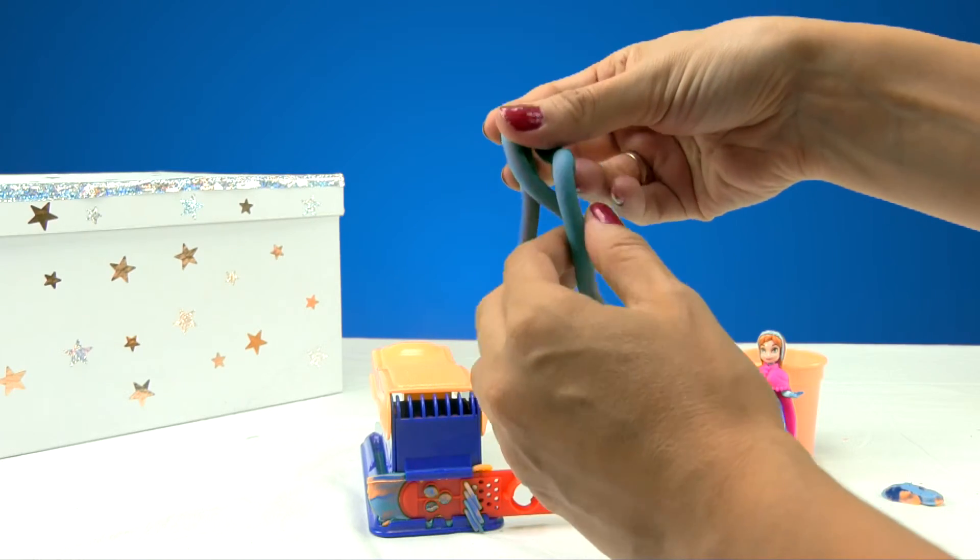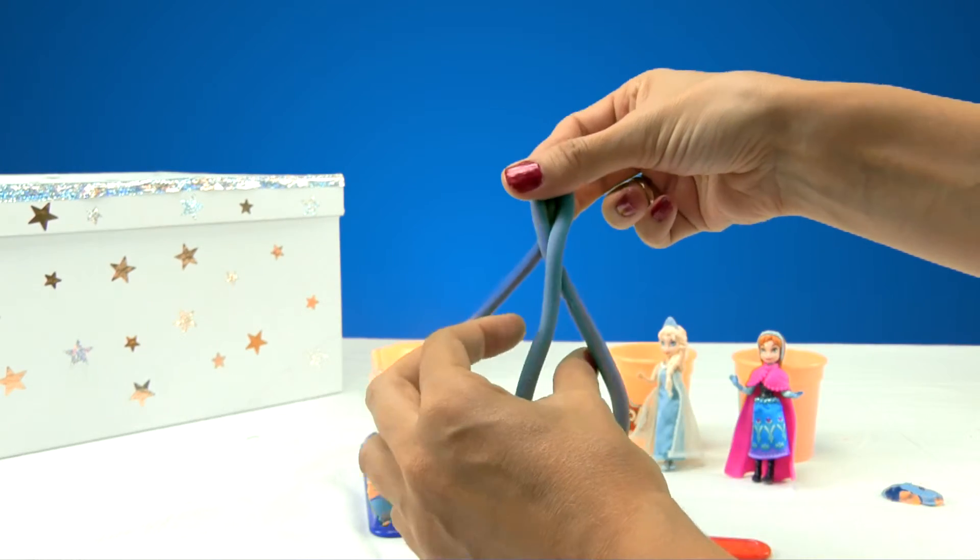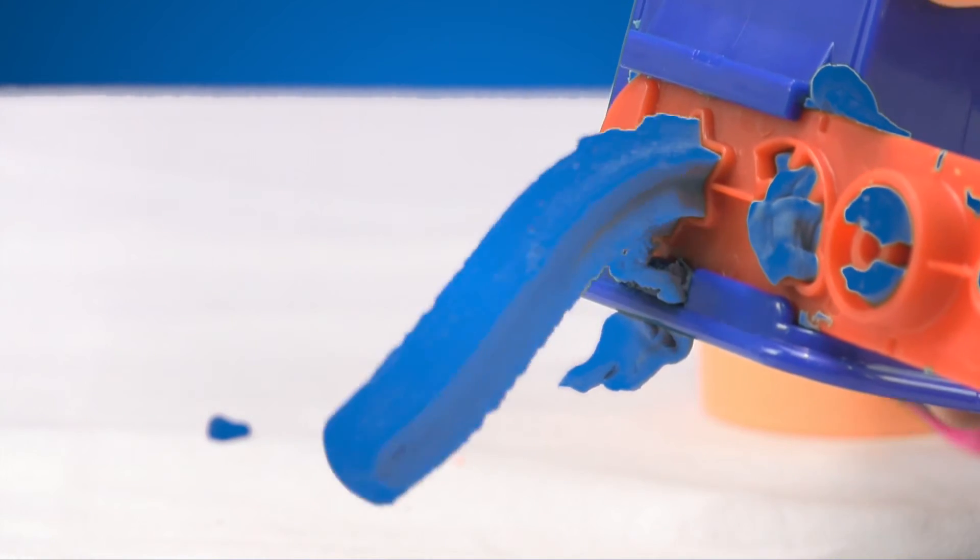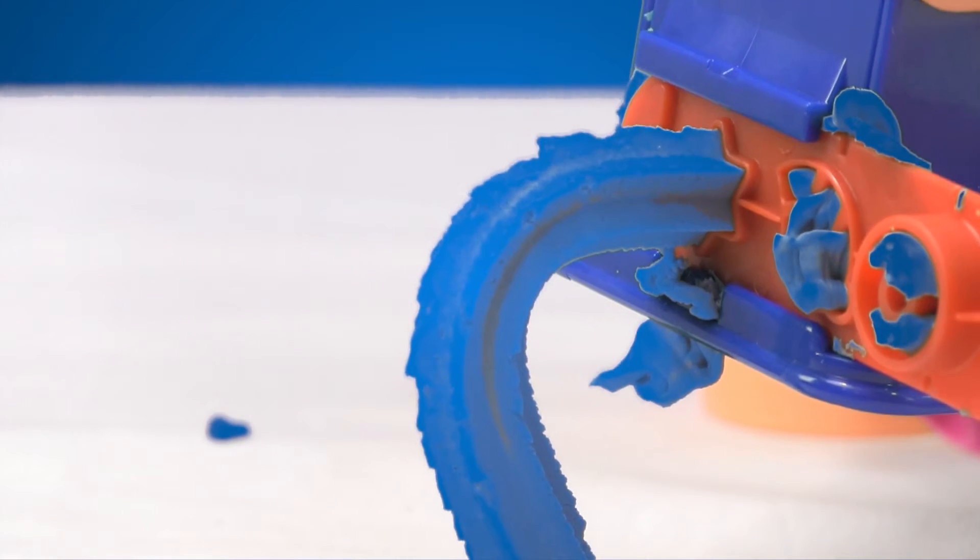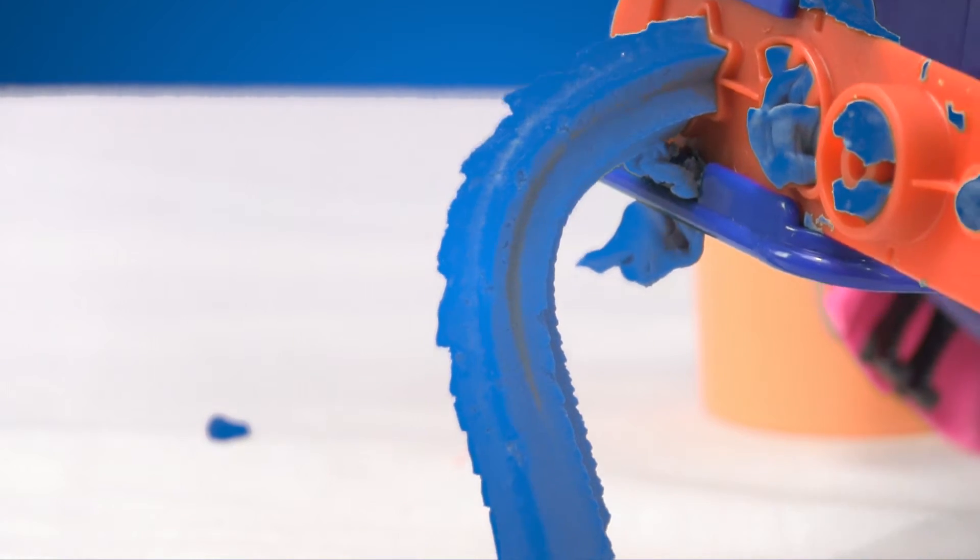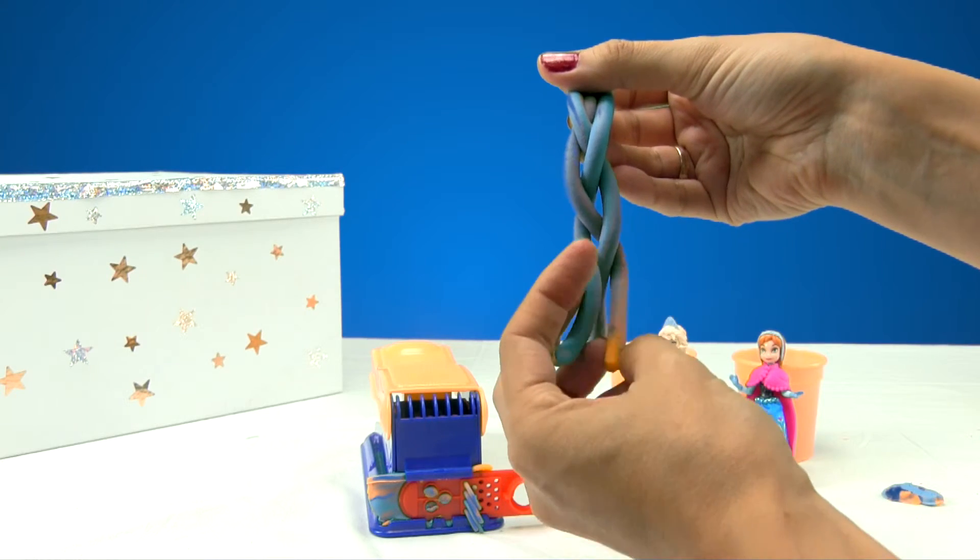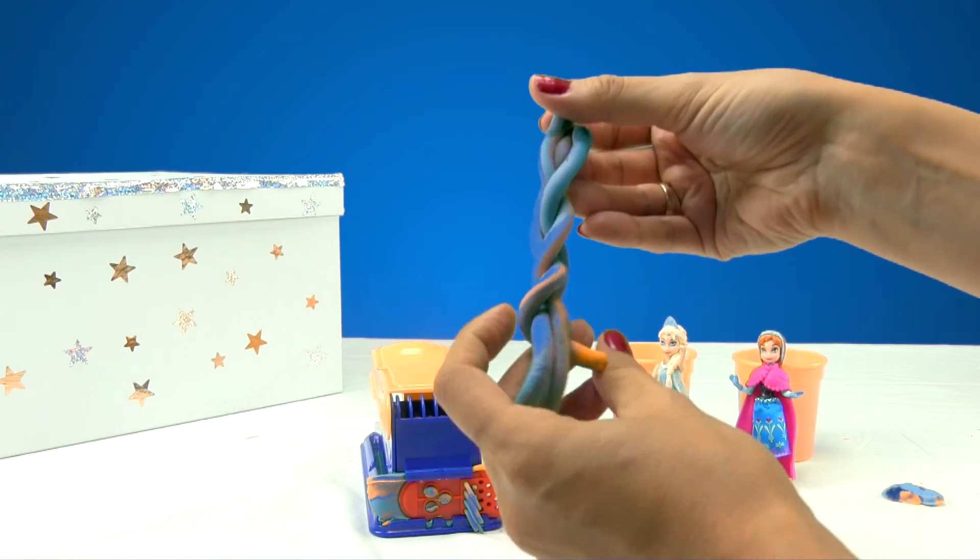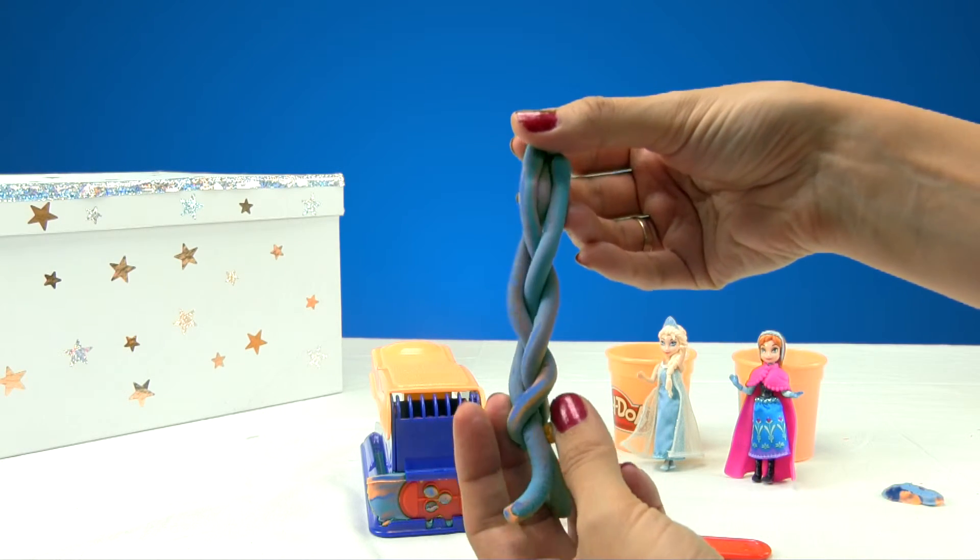And do you know what we can do with this? We can make a braid. You can make a lot of things, actually. It's like a snake. Look, see? I'm going to braid these and there it is. A green braid. Do you see it?